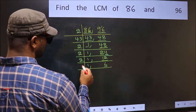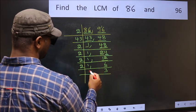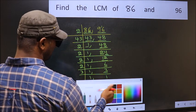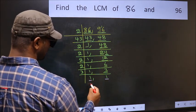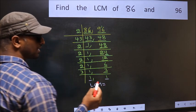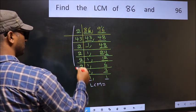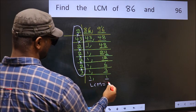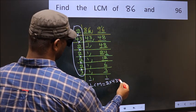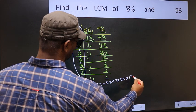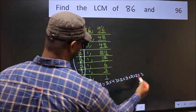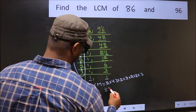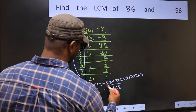Now 6 is 2 times 3. Then 3 is a prime number, so 3 times 1 is 3. We get 1 in both places. So our LCM is the product of all these numbers: 2 × 43 × 2 × 2 × 2 × 2 × 2 × 3. When we multiply these numbers, we get 4128 as our LCM.